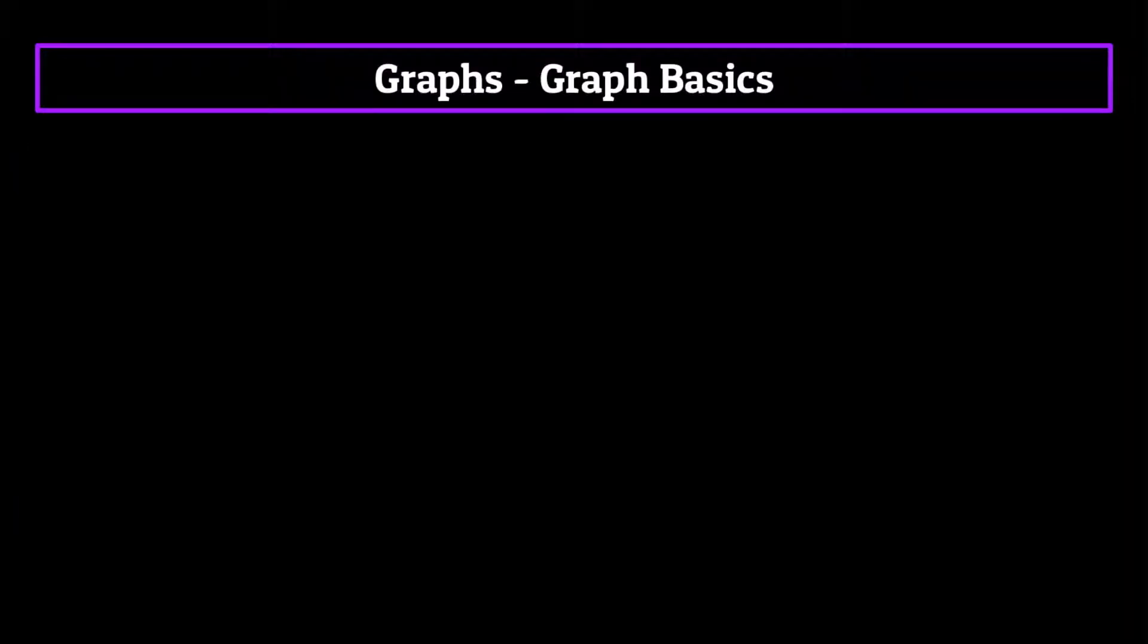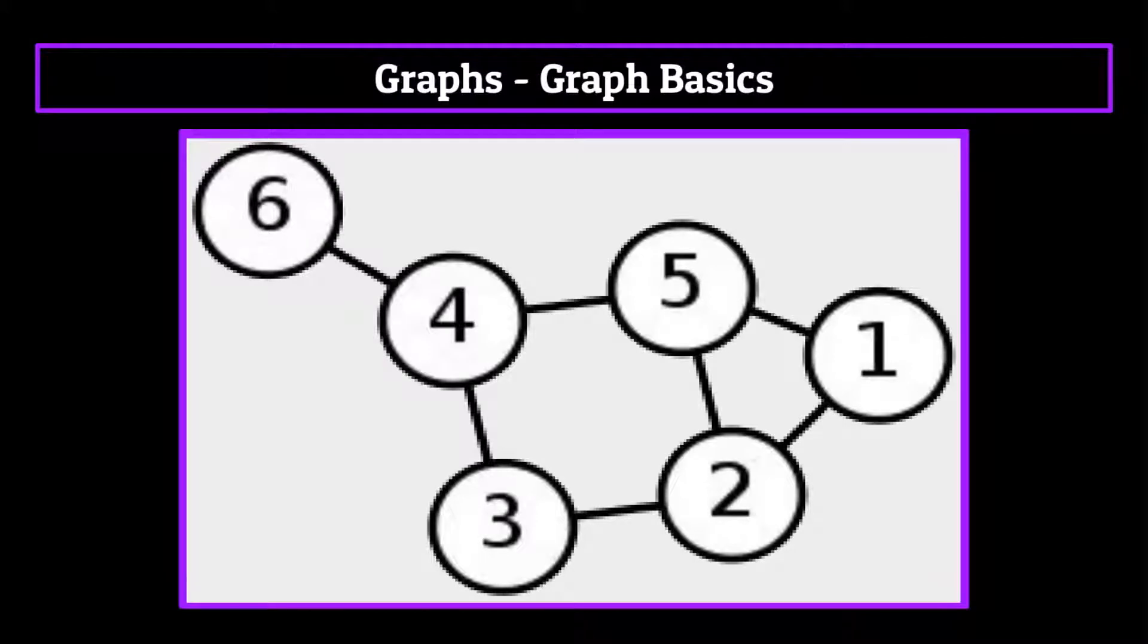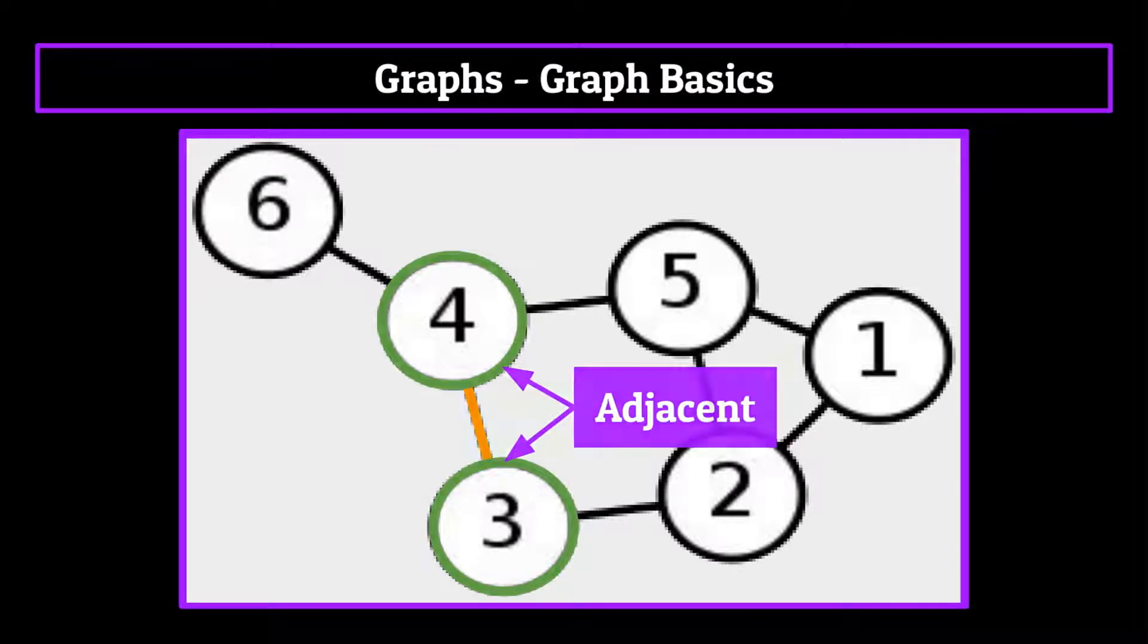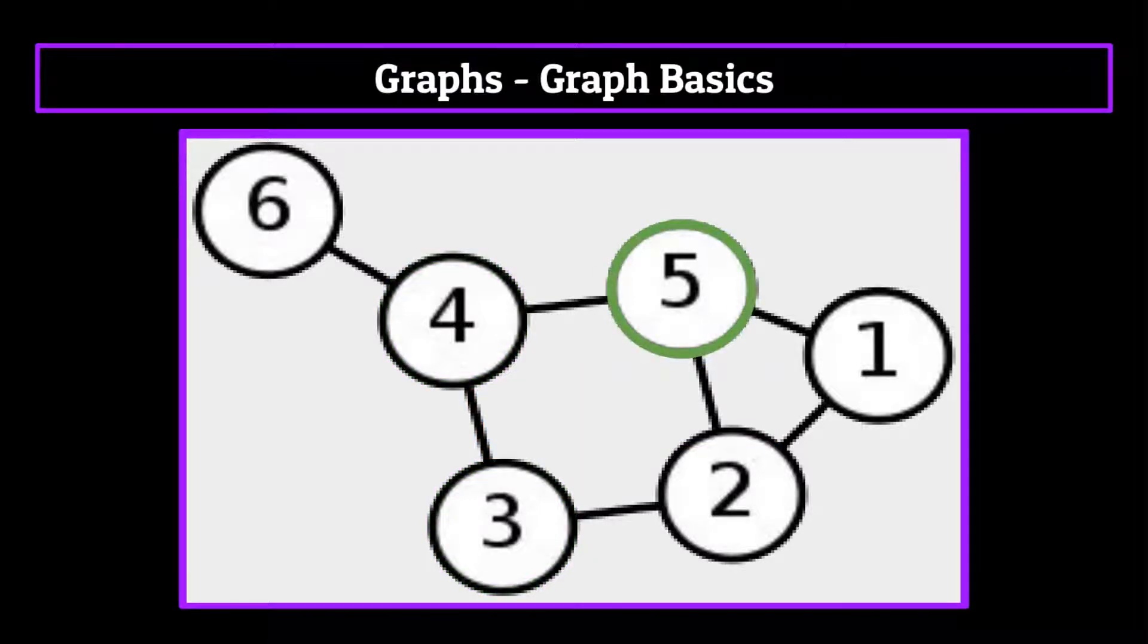One final thing I want to mention about the basics of graphs is about the relationships that occur between two nodes. If we have a particular edge which connects two different vertices, they're known as adjacent to one another. So for example, the five node would be adjacent to the four, two and one nodes.